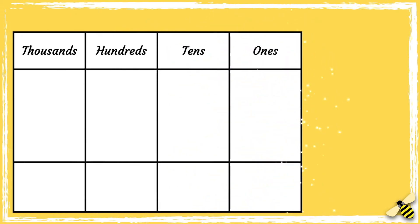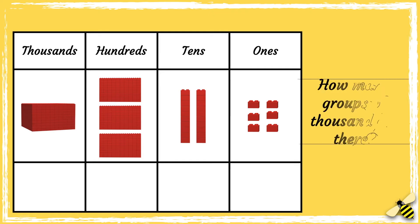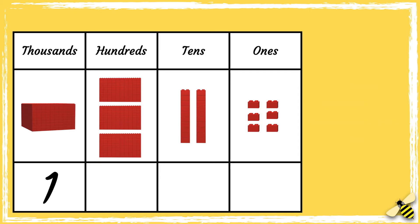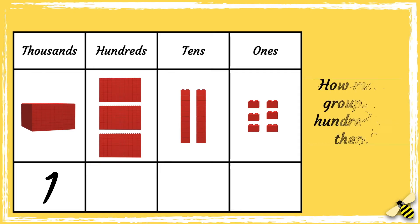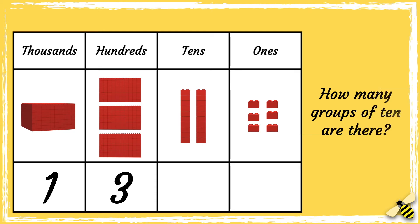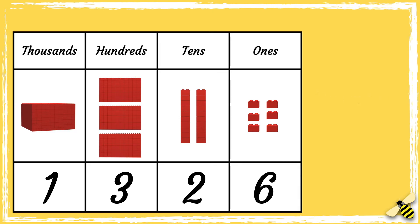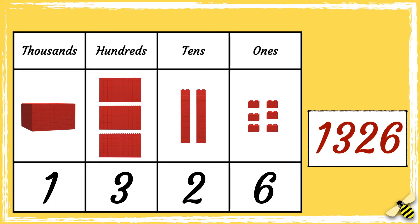Here is a place value grid. What number is shown on the grid? We'll start by looking at how many groups of thousand there are. There is one group of a thousand. Now we can look at how many groups of hundred there are — there are three hundreds. Now we can look at how many groups of ten there are — there are two tens. And lastly, we can look at how many ones there are — there are six ones. So the number shown on the grid is one thousand three hundred and twenty-six.